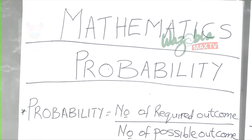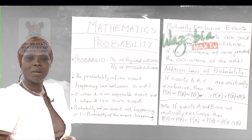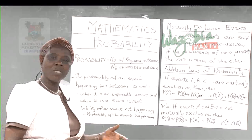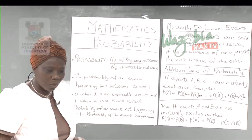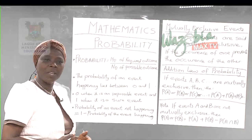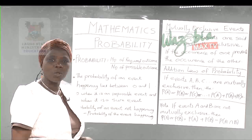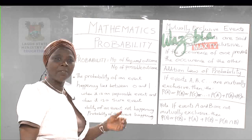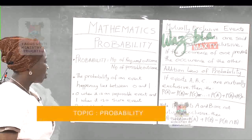We have learned that probability is the measure of the likelihood of an event occurring or not occurring. To calculate the probability of an event, we only need to find the number of required outcomes divided by the number of possible outcomes.